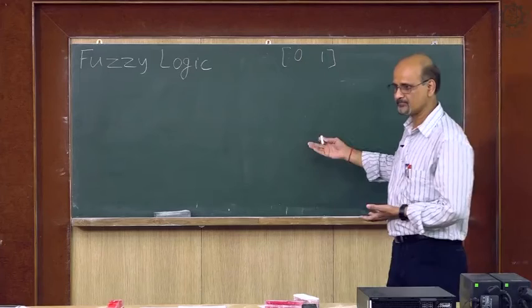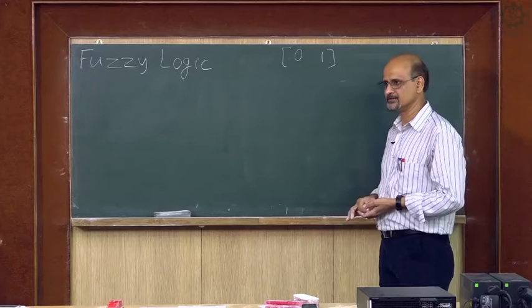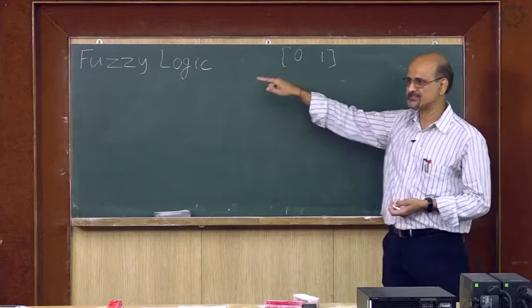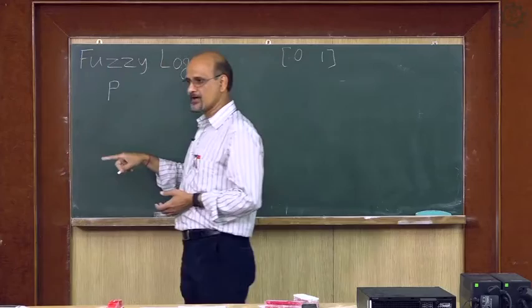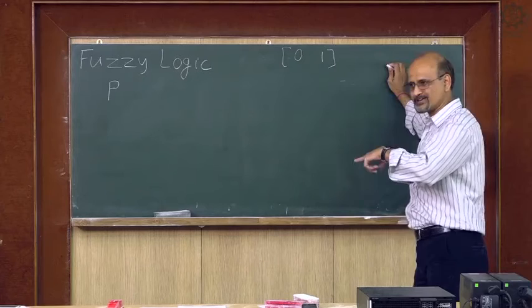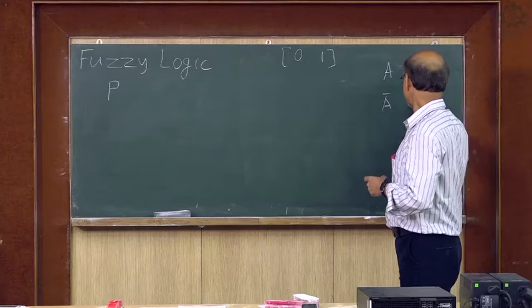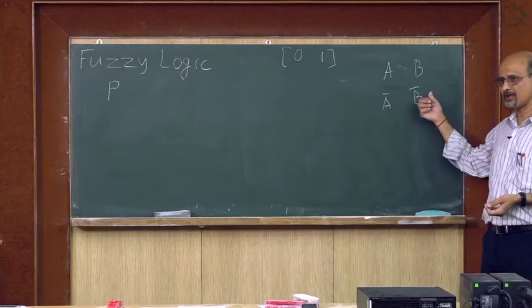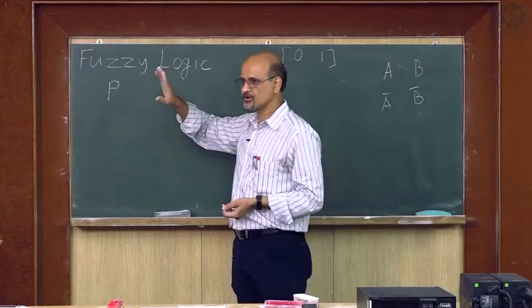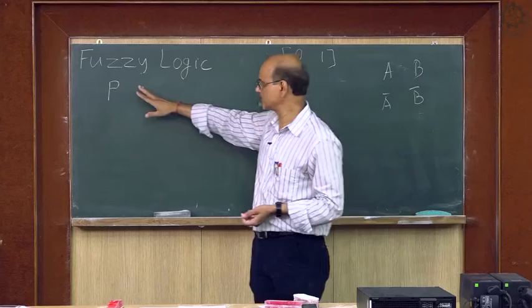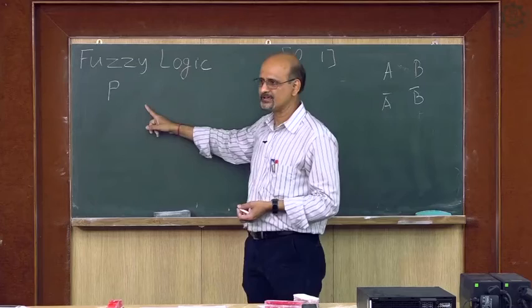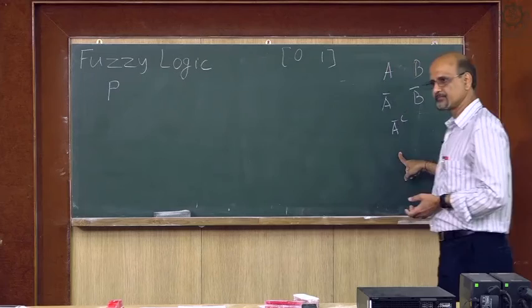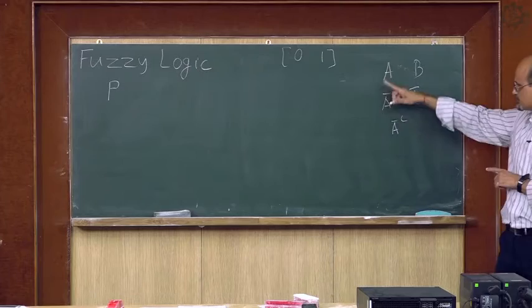Now in fuzzy logic, the answer will be in [0,1] — a closed set. That means you can have fully true (1), fully false (0), and in between: partial truth — 0.5, 0.6, 0.9 and so on. Those are membership function values. The truth values of fuzzy logic — suppose P is a proposition in a fuzzy set Ā — are now defined using bars, as we said. Remember, here this bar is not complement.